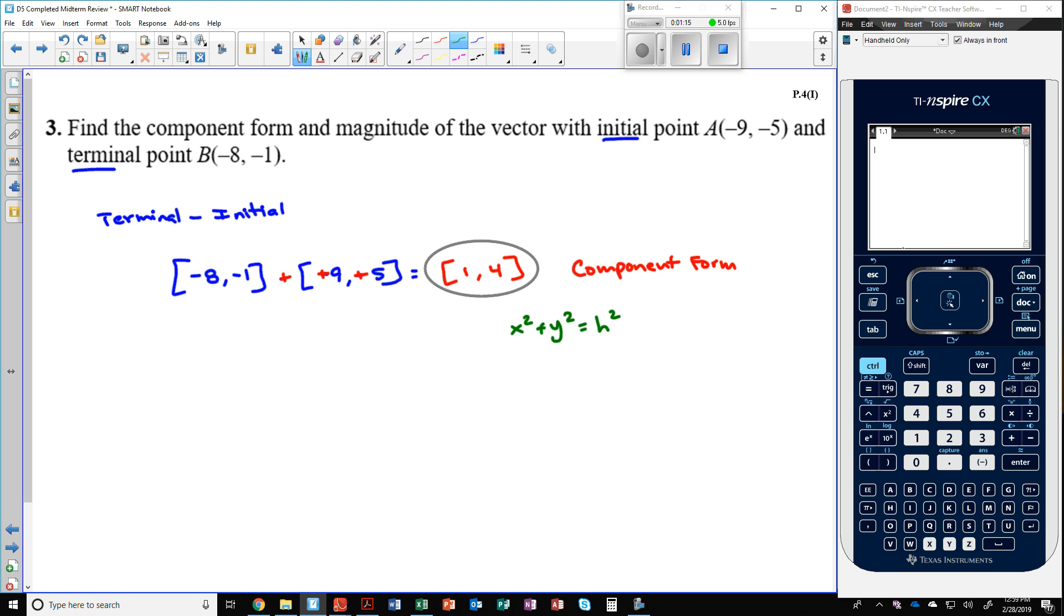So my x is 1 squared, my y is 4 squared. That will equal my h squared here. So 1 squared is 1 plus 16, that equals 17. Since h squared equals 17, the hypotenuse equals the square root of 17. That right there is my magnitude.